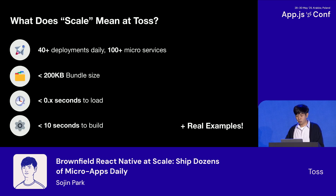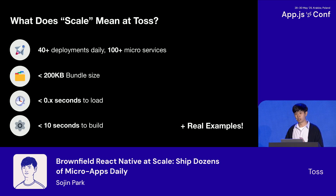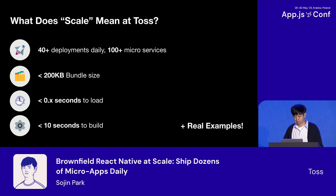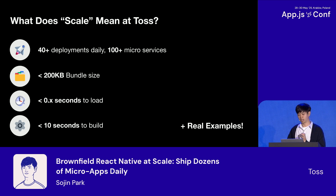So what do we mean by scale? Here's what we are dealing with at TOS. We're deploying over 40 times daily with around more than 100 microservices, with bundle sizes as low as 200 kilobytes which loads in less than a second, and builds in under 10 seconds. This was not easy to get here — we faced plenty of challenges along the way. I'll share why we needed these capabilities, what obstacles we hit, the solutions that actually worked for us, and some examples of how it performs in production.